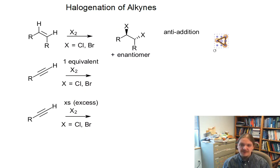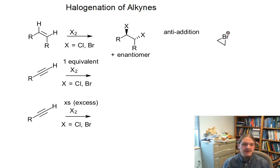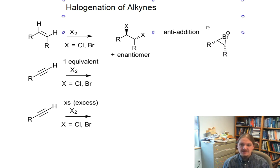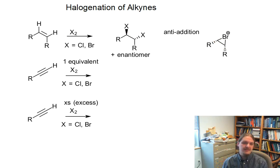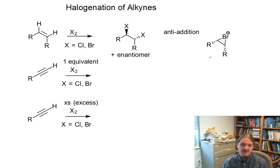We'll pick bromine, for example. If we start with a cis-alkene like I did, you get this bromonium transition state. Both R groups are on the same side, and because the second step is an SN2 reaction, the other halogen attacks from the opposite side, so you get anti-addition.